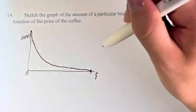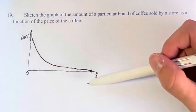This is going to be the rough shape of the graph of the amount of coffee sold as a function of the price.